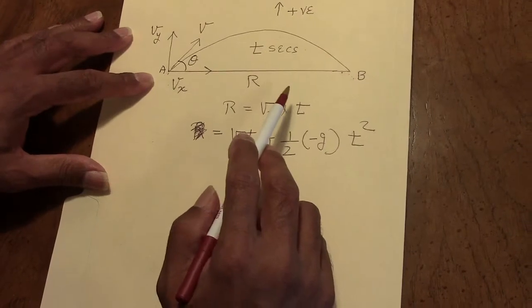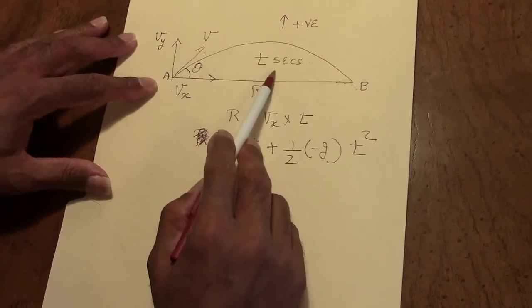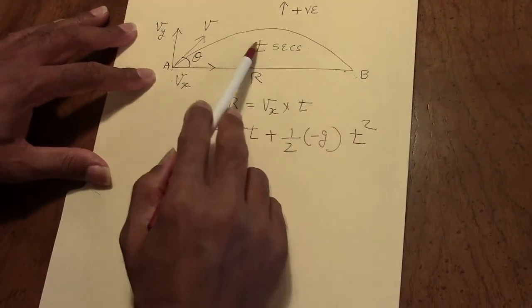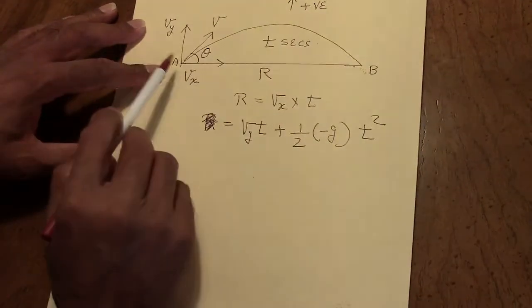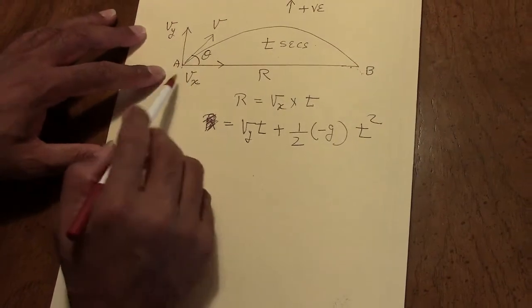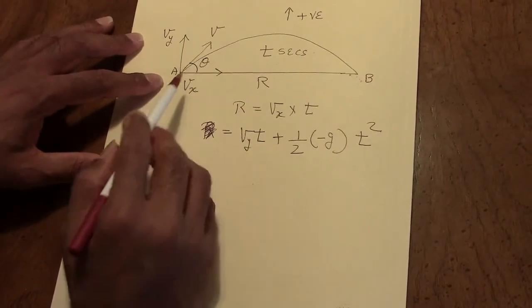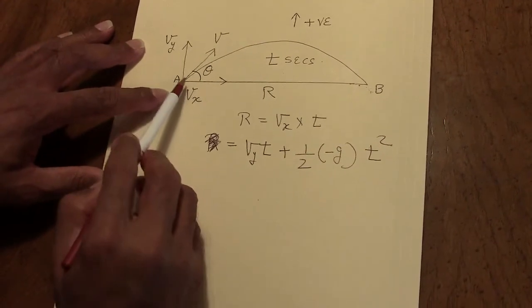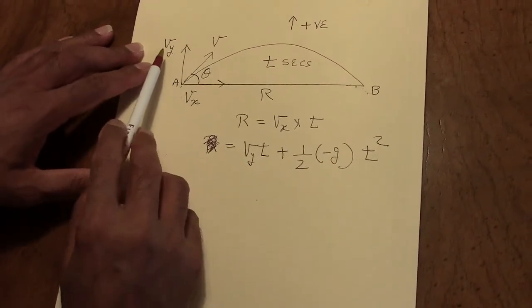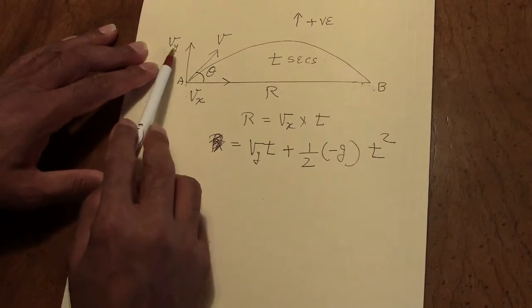Let's say the projectile was in the air for t seconds and we will consider the up direction to be positive. Now the velocity has two components: one is in the horizontal direction, let's call it Vx, and the other is in the vertical direction, designated as Vy.